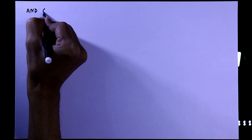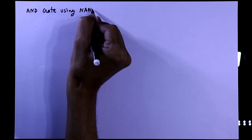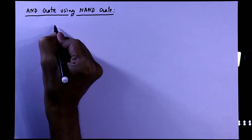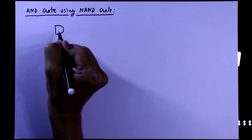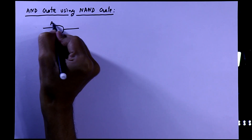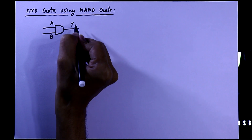In this video we are going to see how to make an AND gate using NAND gate. This is the symbol of two input AND gate. A and B are the inputs, Y is the output.